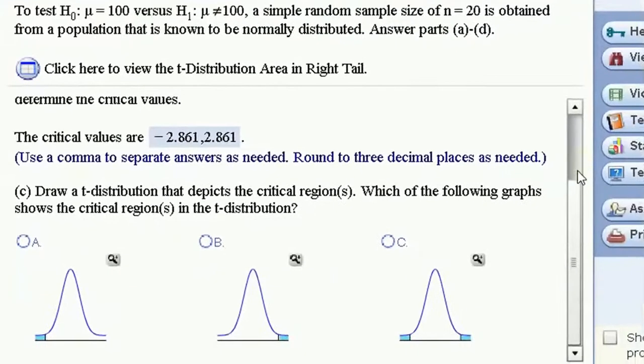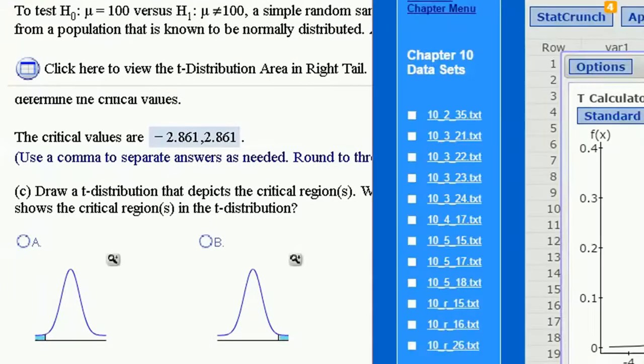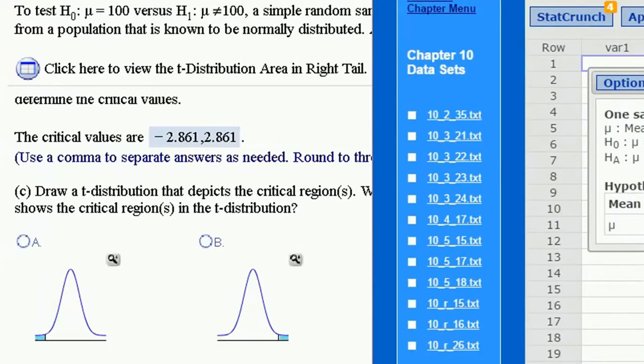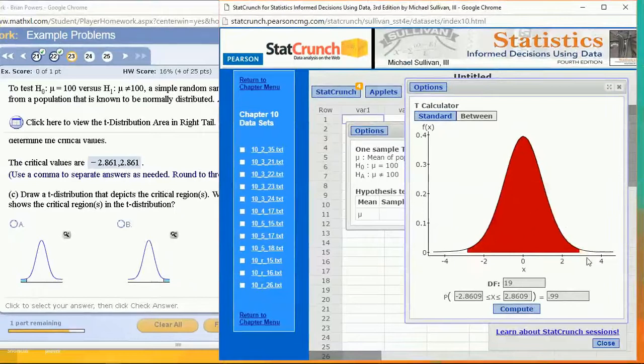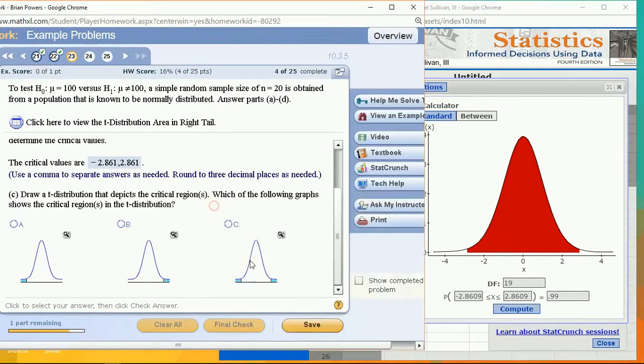And what does this picture look like? The picture I got over here is the critical region is the white part, not the red part. So what I want is this. This is what a two-tailed critical region looks like.